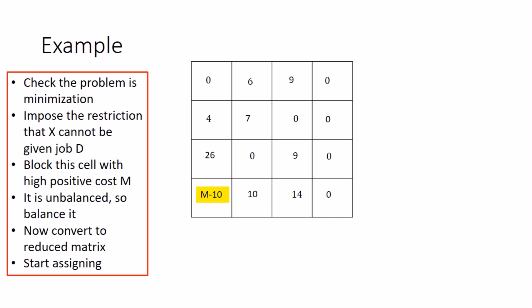This gives the reduced matrix. Start assigning: first row has two zeros — leave it; second row has two zeros — leave it; third row has two zeros — leave it; fourth row has exactly one zero, so allocate there, and the remaining zeros in the same column get crossed. Now every other row has exactly one zero: first row gets assigned, and third row gets assigned. In this example, we reached the optimal assignment in the very first iteration, with the number of boxes equal to four.